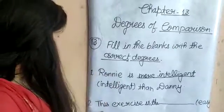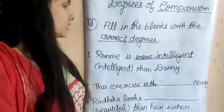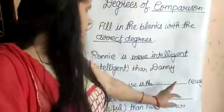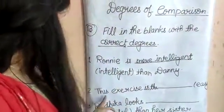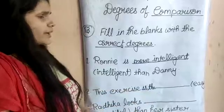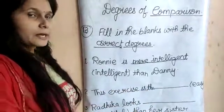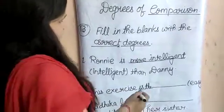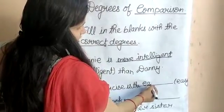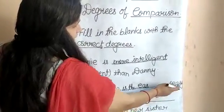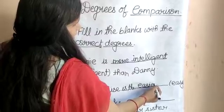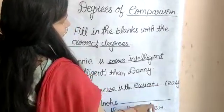Next है: 'This exercise is the ___ (easy)'। यहाँ adjective 'easy' दिया गया है और 'the' का use हुआ है, इसलिए यहाँ superlative degree होगी — 'easiest'। Spelling में Y हटाकर I-E-S-T का use करें।